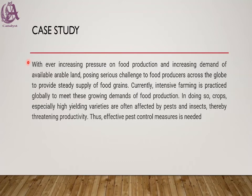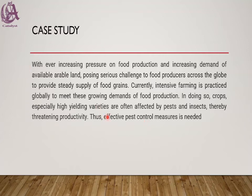Let us now discuss a case study. With ever-increasing pressure on food production and increasing demand on available arable land, food producers across the globe face serious challenges in providing a steady supply of food. Intensive farming is practiced globally to meet growing demands. Crops, especially high-yielding varieties, are often affected by pests and insects, threatening productivity. Thus, an effective pest control measure is needed. This is a practical scenario on which we can build a 4W canvas.